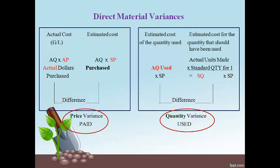The difference in the actual quantity used and the quantity that should have been used creates the variance. Direct materials has two AQ times SP in the middle, because direct materials purchased and direct materials used is not the same quantity — materials can be purchased and stored in the warehouse to be used in a different period.